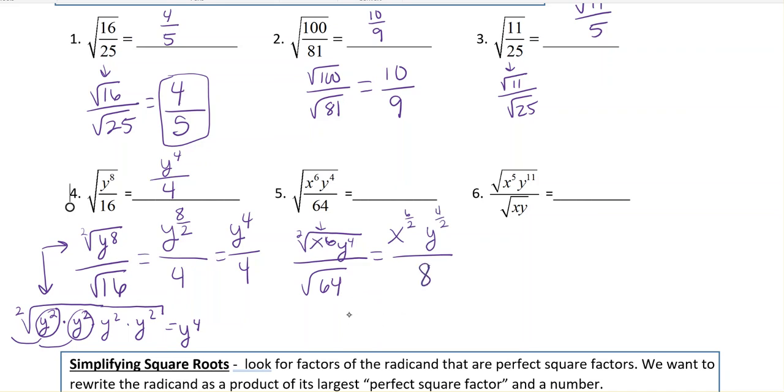Again, hopefully those are becoming more familiar. And then you just have to simplify your fractions for your exponents. So you have x to the 6th divided by 2 is 3, and y to the 4th divided by 2 is 2 all over 8.